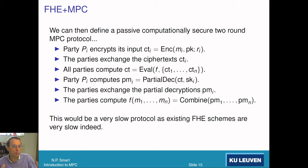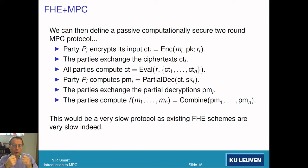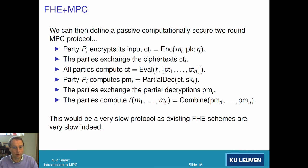Each party then applies the partial decryption operation to the output ciphertext from eval to get their partial decryption. The parties exchange those partial decryptions, which allows them to apply the combine function and produce the final output of the MPC protocol.